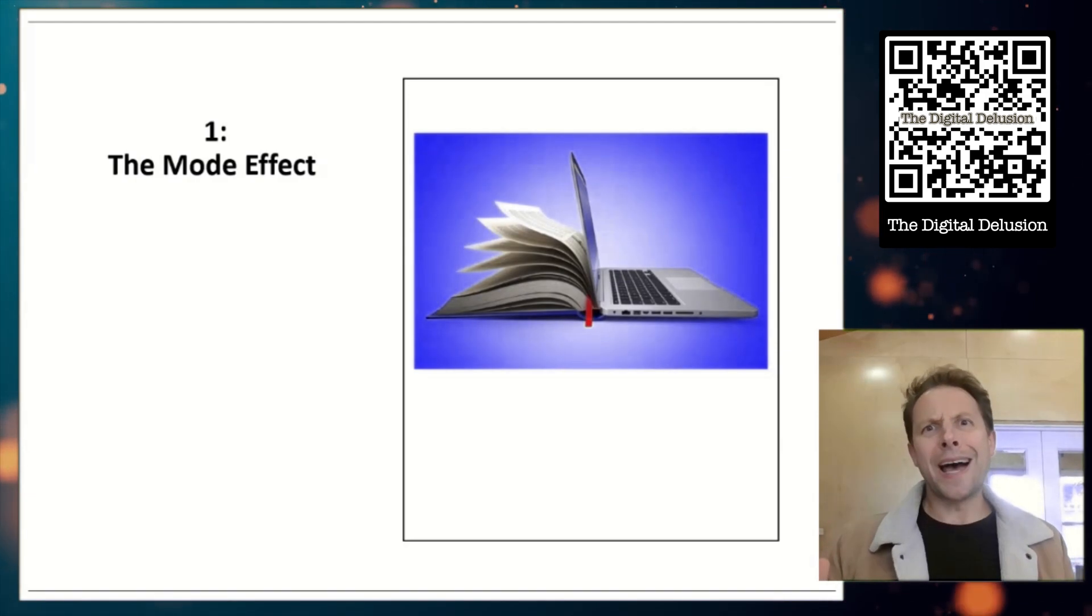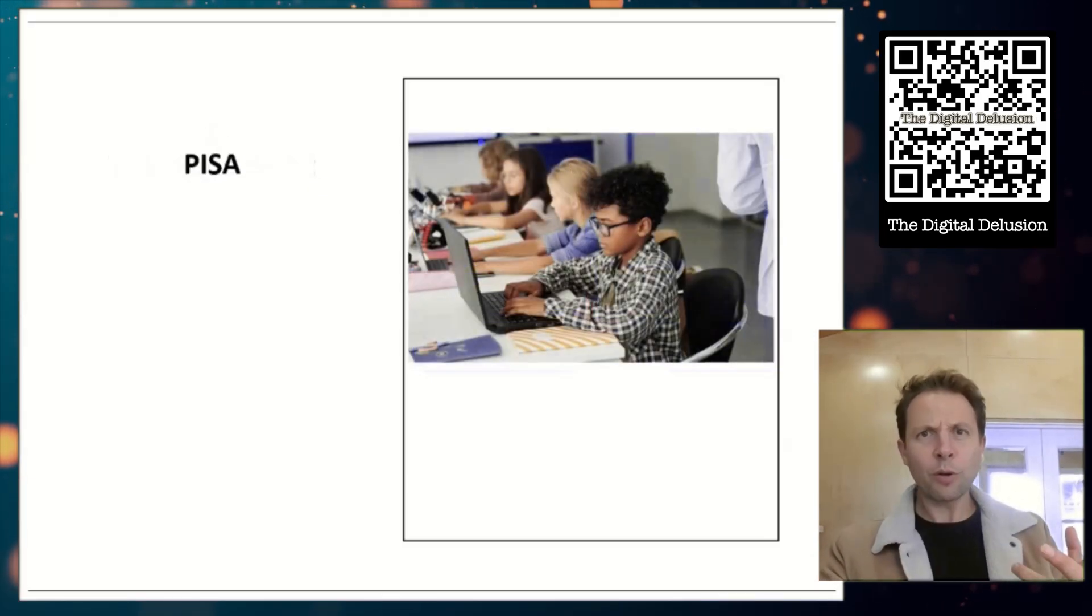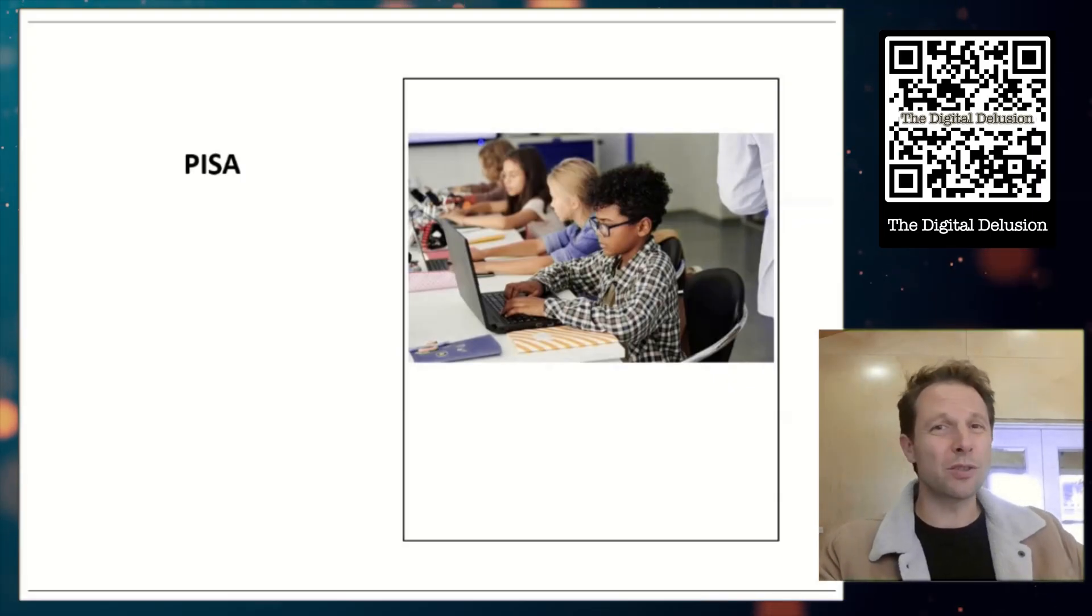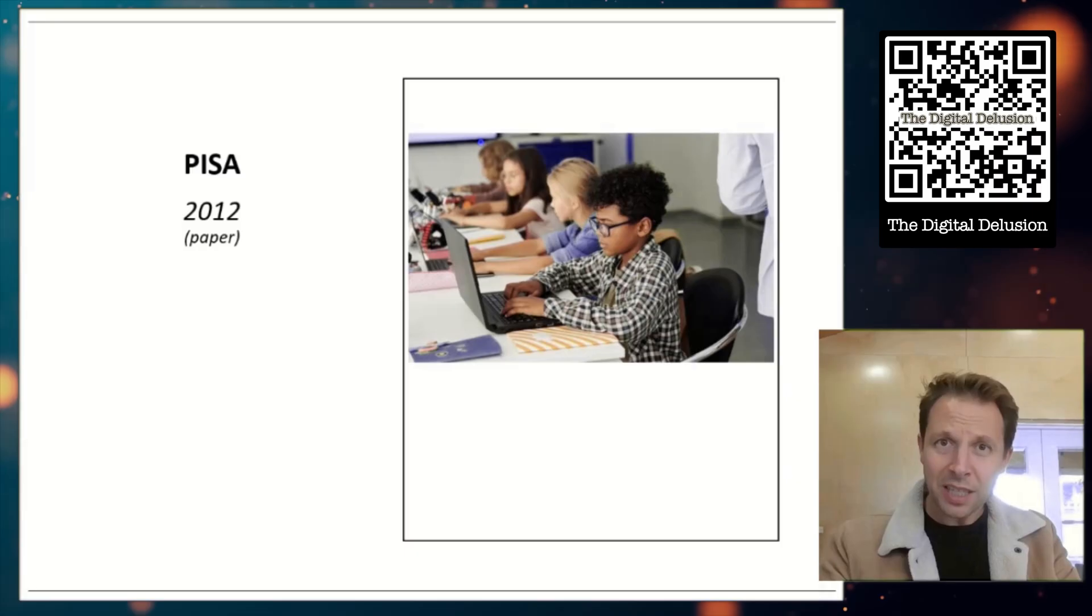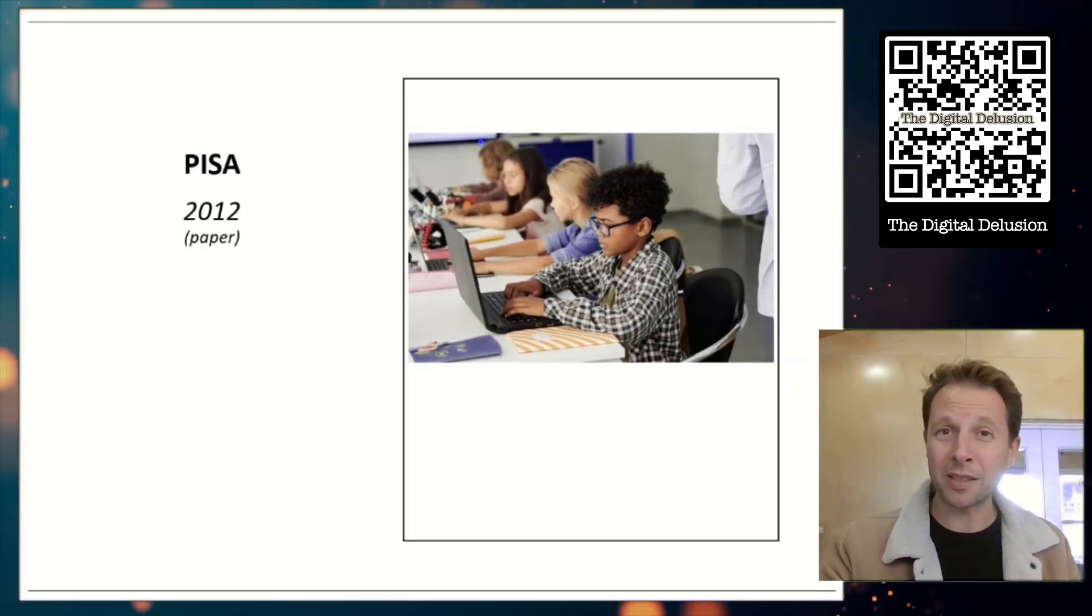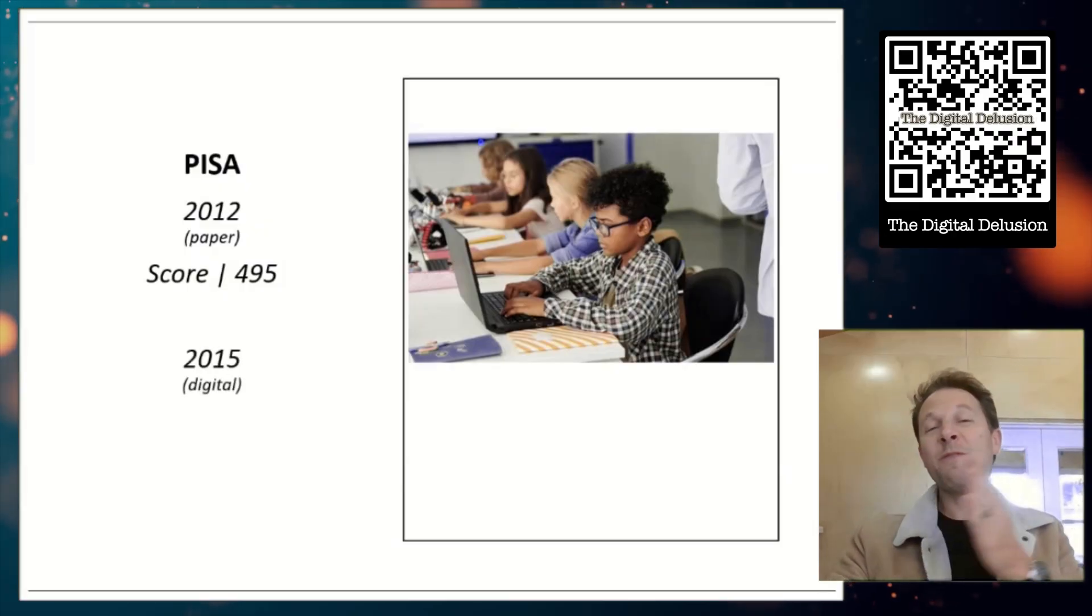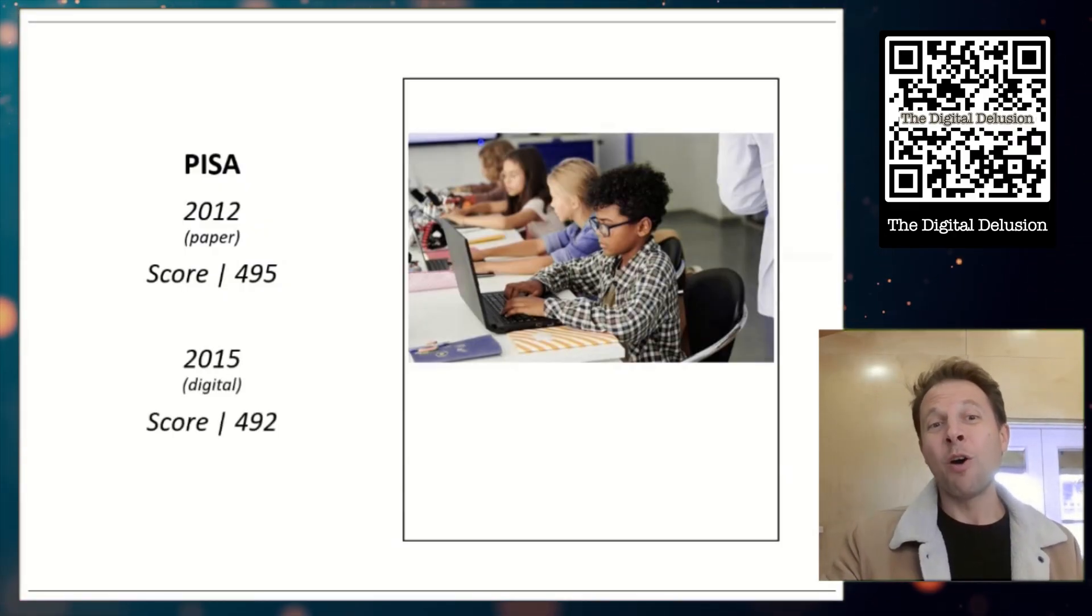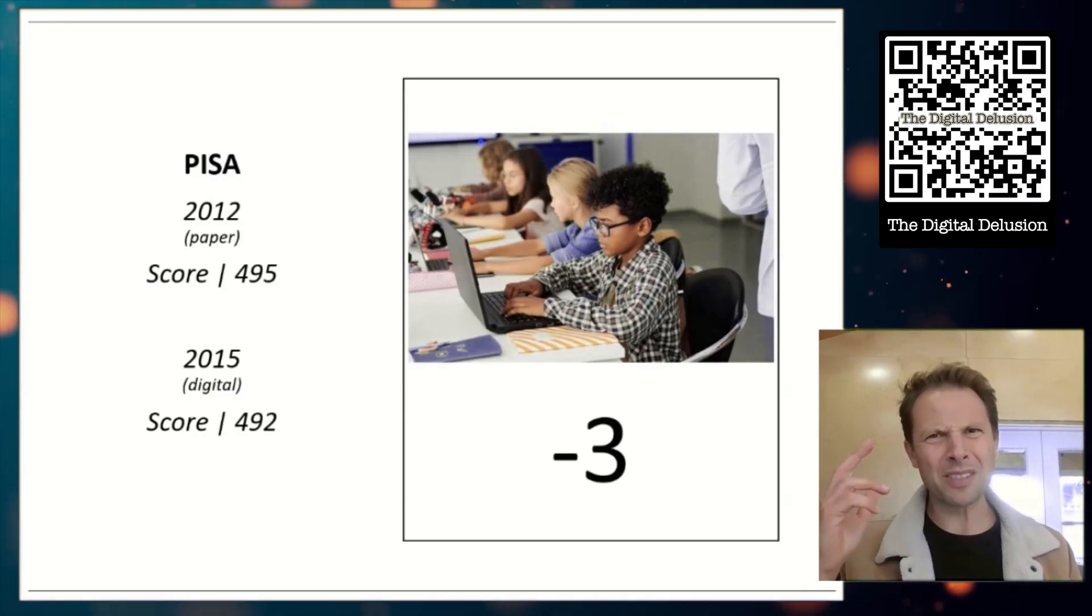Now, how bad is that drop? To understand, let's take a look at some international tests. So let's take a look first at the PISA. This is a test given to hundreds of thousands of kids every three years across 90 plus countries in the world. In 2012, that was the last year this test was paper-based, and the average score that year was 495. Pretty good. In 2015, that is when they moved pure digital, and that year we only saw scores of 492. So wait a second, that's only a drop of three points. That's not bad at all.